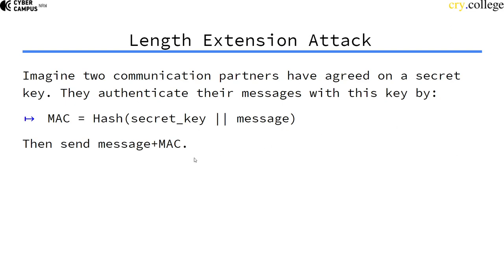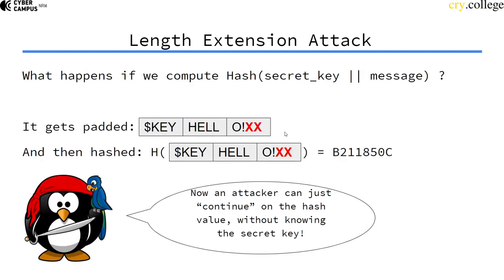We say we use a hash function and hash the secret key concatenated with the message, then we send the message plus the MAC to our recipient. The recipient has the secret key, can hash the secret key and the message, and verify whether the message is authentic.